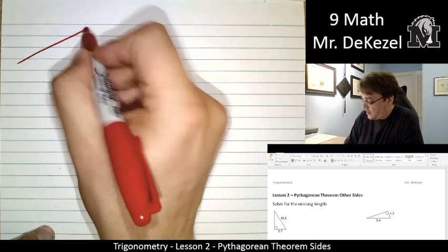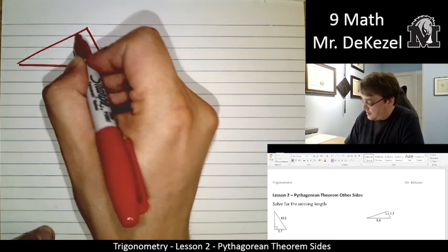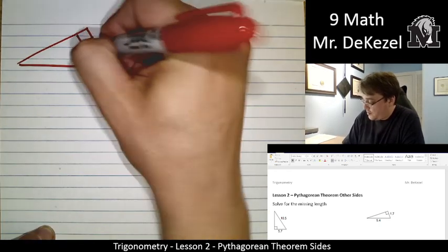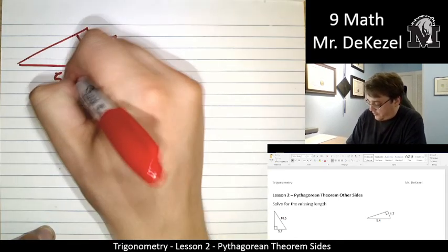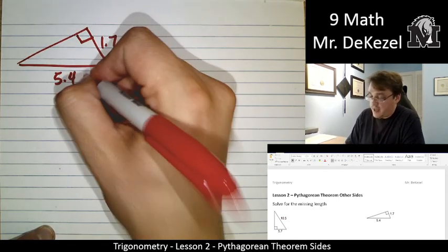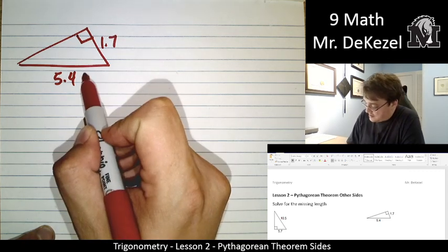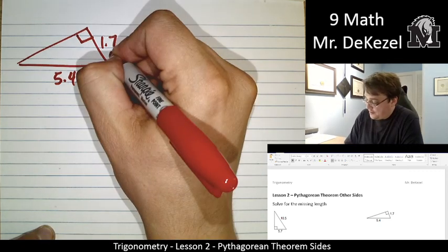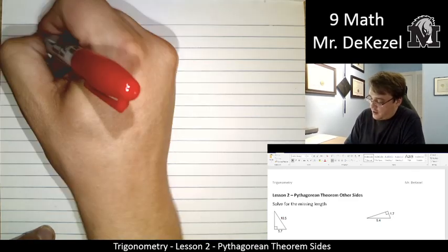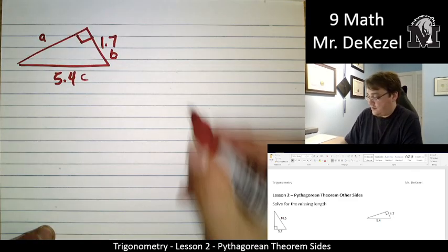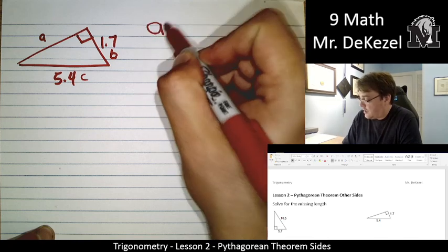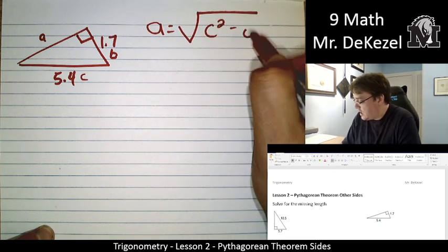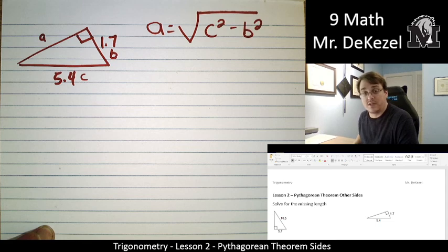We have a triangle. Looks like this. We have that as the right angle. 1.7 is this side. 5.4 is this side. We are going to label these sides. So this is going to be C, the hypotenuse, the one across from the right angle. I'm going to label this one B. And our unknown is A. So we know that our equation A equals the square root of C squared minus B squared.